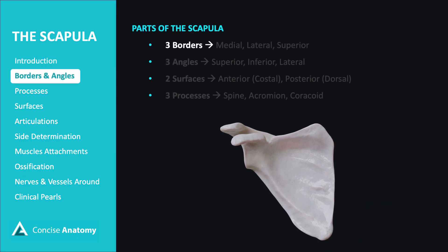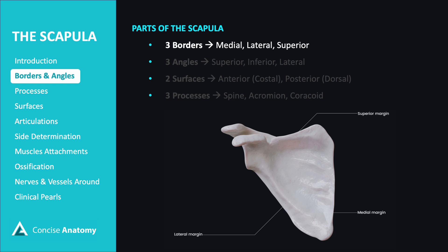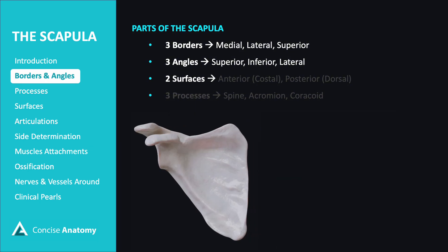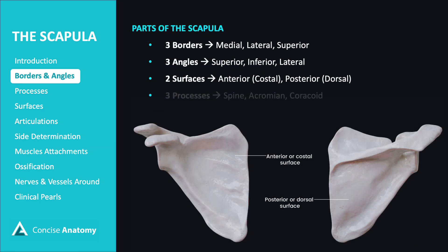The scapula has three borders: medial, lateral, and superior. It has three angles: superior, inferior, and lateral. The scapula has two surfaces — the anterior or costal surface and the posterior or dorsal surface — and three bony projections or processes: the spine of the scapula at the back, the acromion process, and the coracoid process.